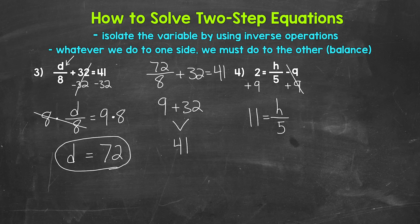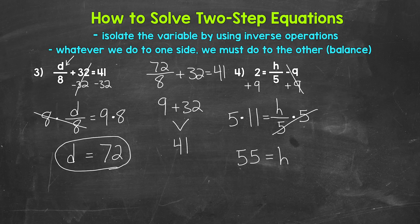So we have h divided by 5 equals, and on the left side, 2 plus 9 gives us 11. So h divided by 5 equals 11. We are dividing h by 5 — the inverse operation of division is multiplication. So let's multiply the right side by 5, and multiply the left side by 5 as well. On the right side, dividing by 5 and multiplying by 5 cancel each other out, and h is now isolated. h equals 5 times 11, which gives us 55. So h equals 55.